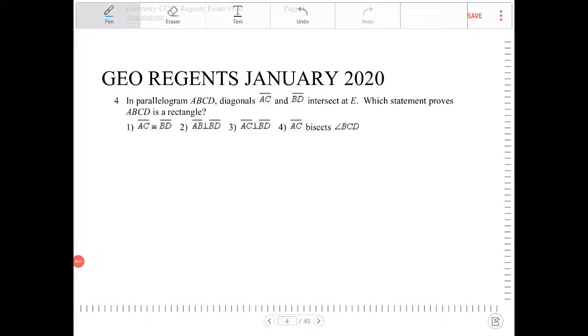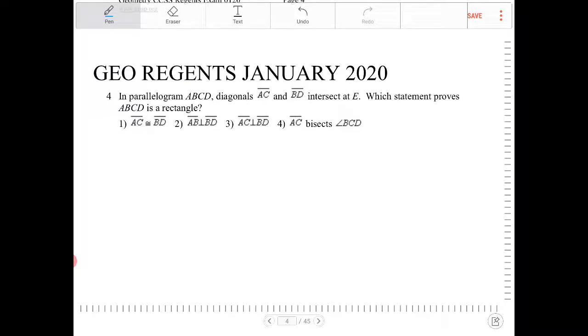In parallelogram ABCD, diagonals AC and BD intersect at E. Which statement proves ABCD is a rectangle? So, let's draw out the situation.